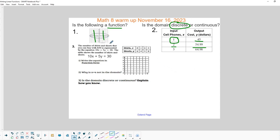Okay, number three, the number of shirts and shorts that you can buy with $30 is represented in the following table of values. So if you get zero shirts and six shorts, it'll cost you $30. If you get one pair of shorts and four shirts, $30, and so on and so forth. And three shirts and no shorts costs you $30.